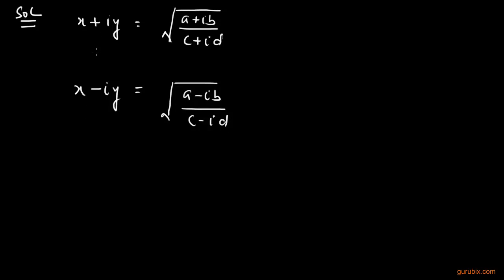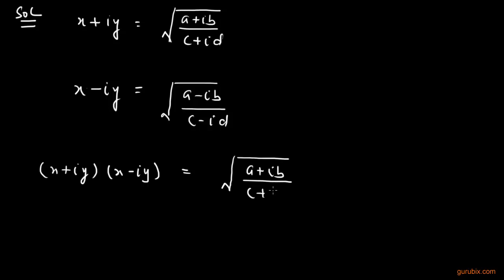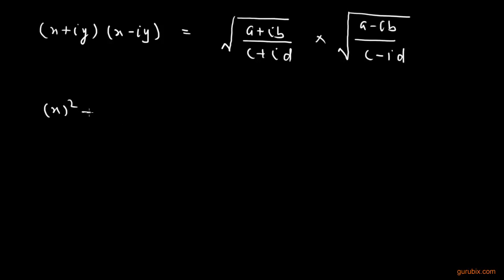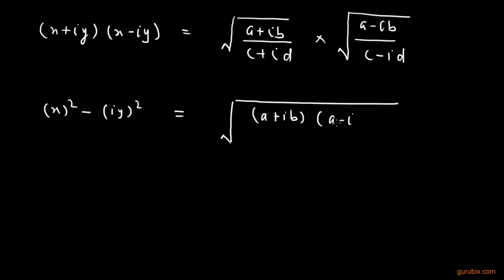If we multiply these two complex numbers, then we have (x plus iota y) into (x minus iota y) equals the square root of (a plus iota b) over (c plus iota d), multiplied by the square root of (a minus iota b) over (c minus iota d). This gives us x squared minus iota squared y squared on the left, and the square root of (a plus iota b)(a minus iota b) over (c plus iota d)(c minus iota d) on the right.